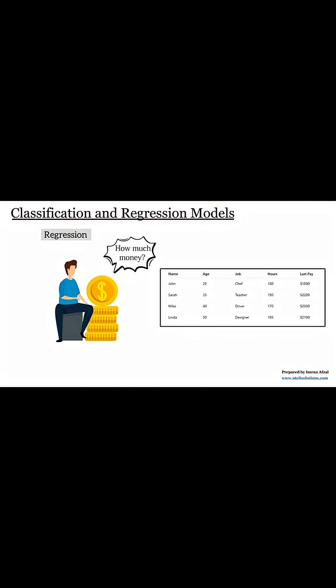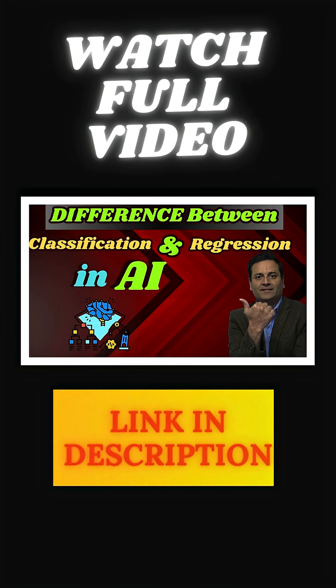Then for a new person, it looks at the details and says, this person might earn $2,000 next month. That is a number. So this is a regression problem. To watch the full video, visit the link in the description.